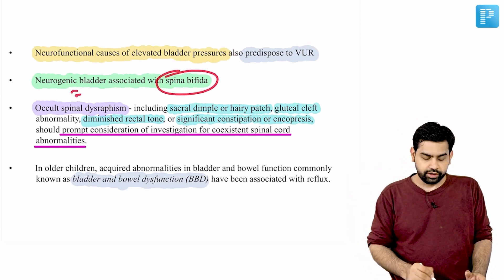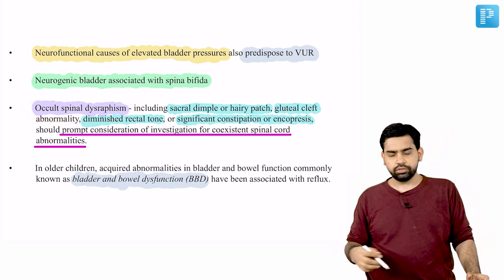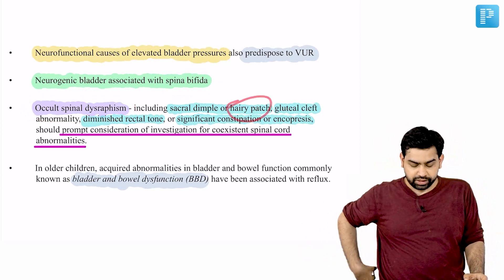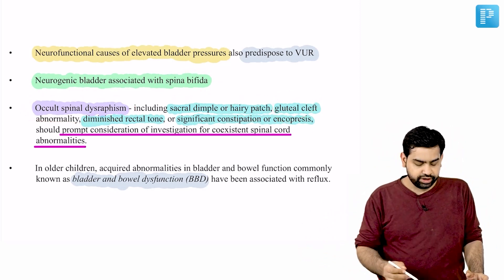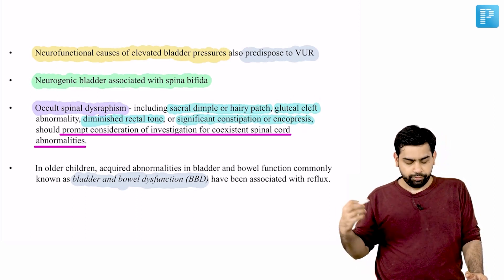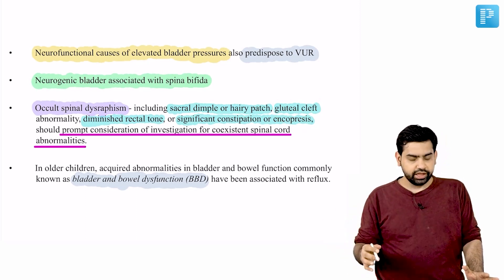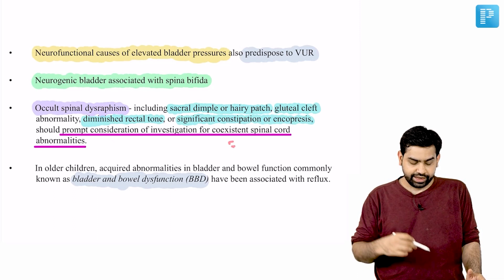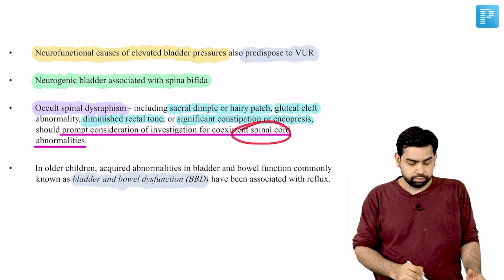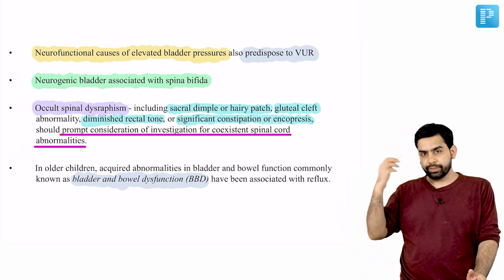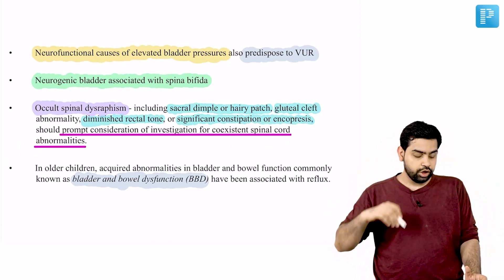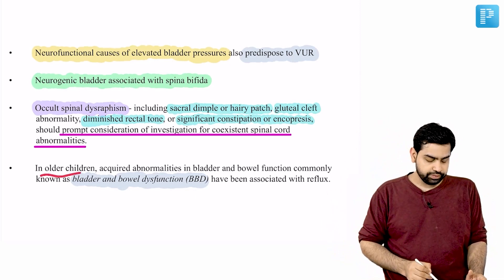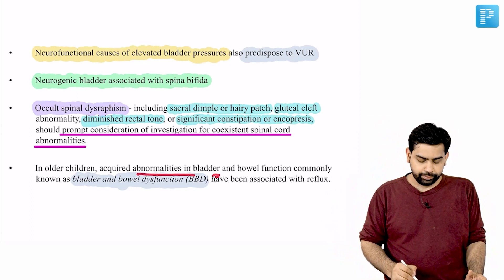Neurogenic bladder is associated with spina bifida and occult spinal dysraphism. On evaluation you may find a sacral dimple, hairy patch, abnormal gluteal cleft, diminished rectal tone, or significant constipation and encopresis. These findings on physical examination should prompt investigation for spinal cord abnormalities, as a spinal cord abnormality may be leading to neurogenic bladder and subsequently to vesicoureteral reflux.